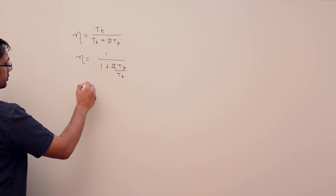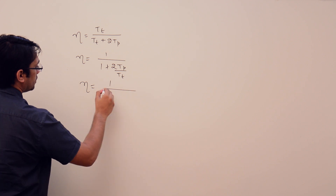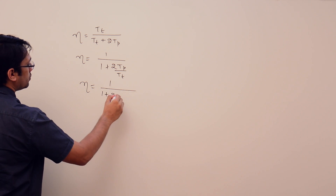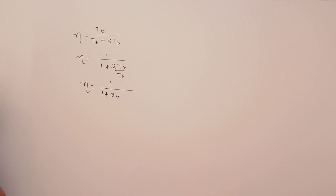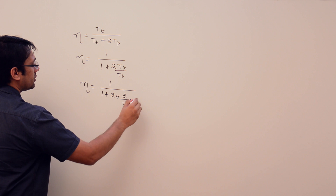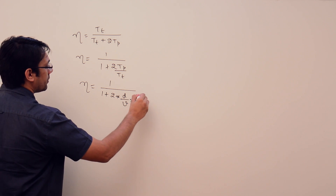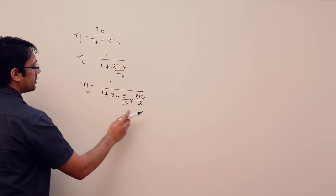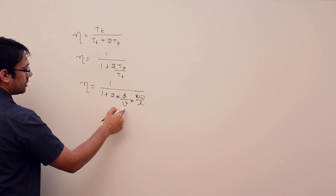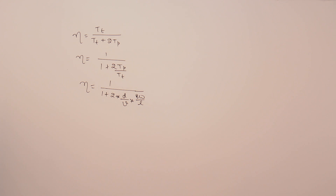Substituting the values: Tp is distance upon velocity of the signal, and Tt is length upon bandwidth. So Tp upon Tt becomes distance upon velocity multiplied by bandwidth upon length, which simplifies the expression accordingly.